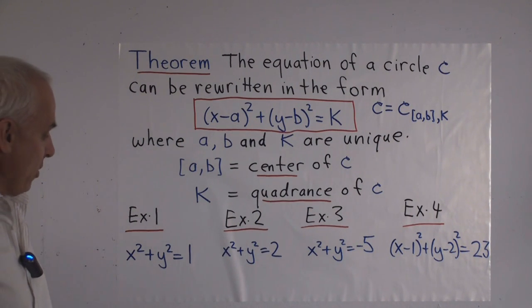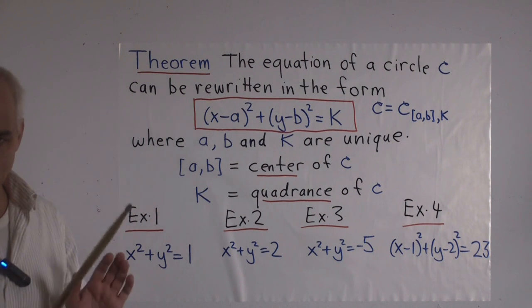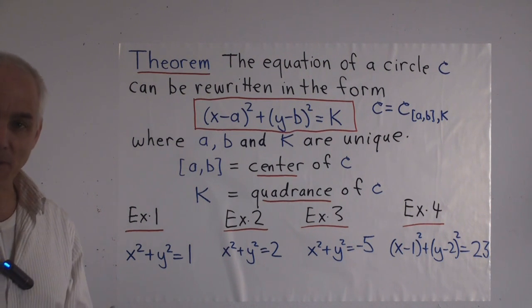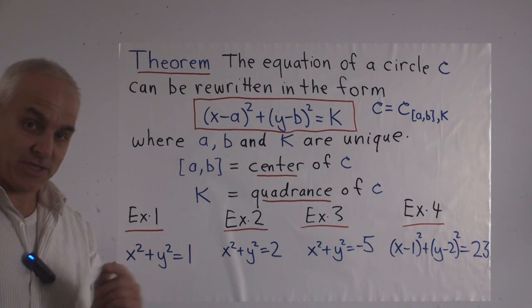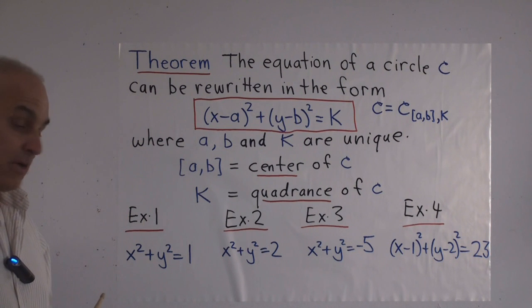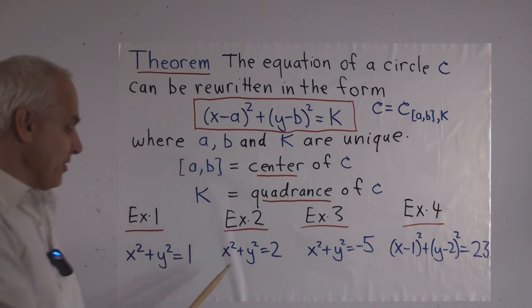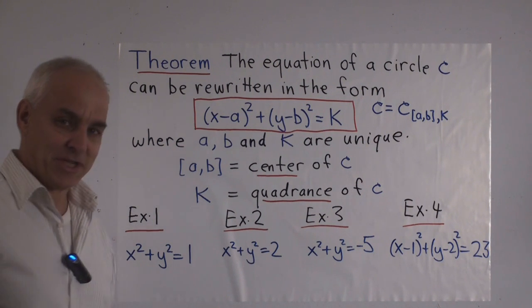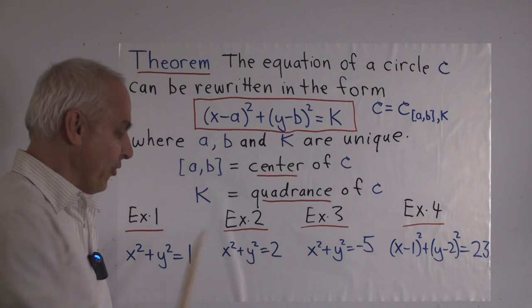So some examples of circles where I write the equation rather than the proportion of six things. Here's the equation x² + y² = 1, which represents the unit circle whose center is at the origin (0,0). Here is a circle x² + y² = 2, which is a circle also of center (0,0), but with quadrance 2.